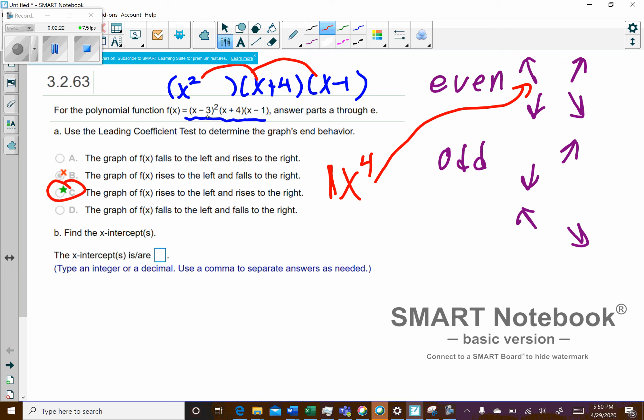And so you ask yourself, what makes each one of those factors equal 0? And so positive 3 would work, negative 4 would work, and then positive 1 would work. Then what they're going to ask you is, you got your x-intercepts. Now, some of them cross the x-axis, and some of them touch.